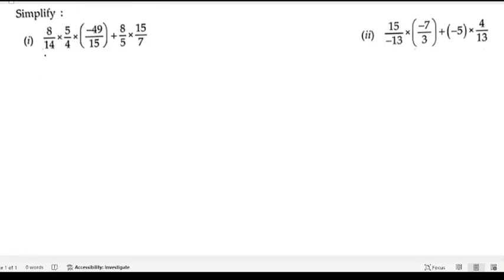To simplify, we need to simplify this given expression. Let's start the solution. First we will write the given: 8/14 × 5/4 × (-49/15) + 8/5 × 15/7.